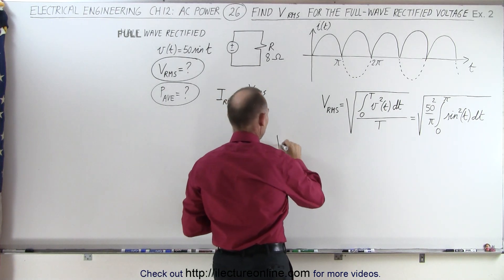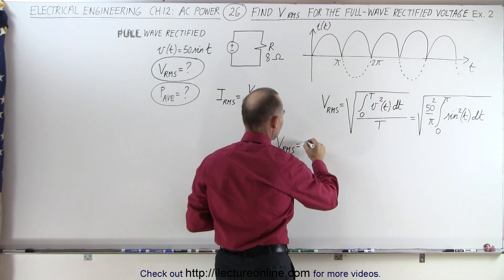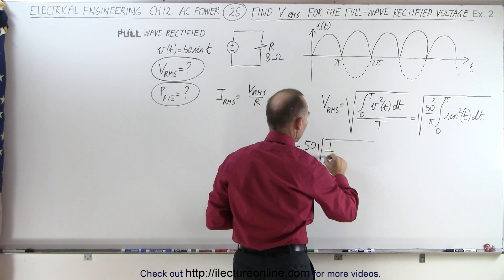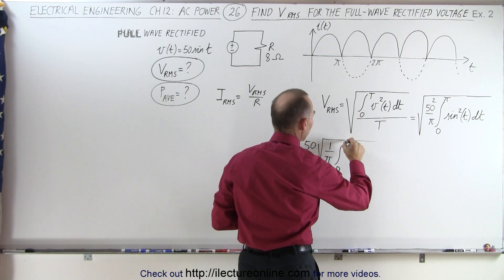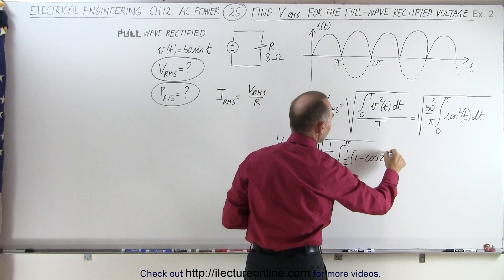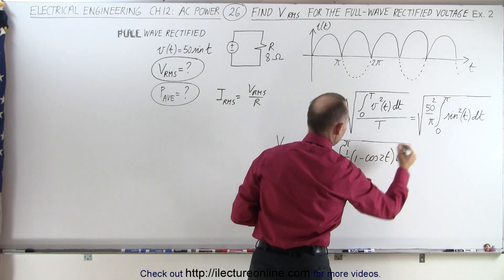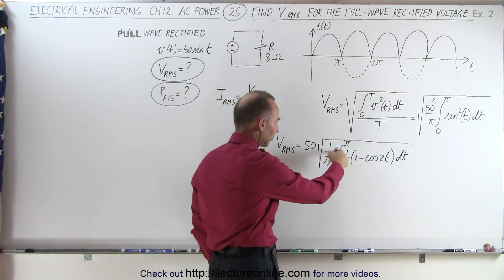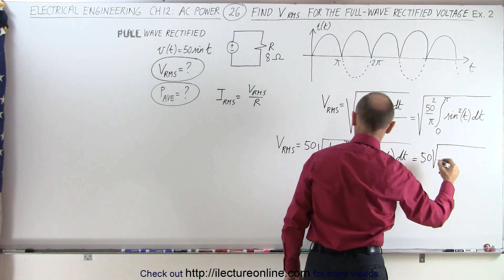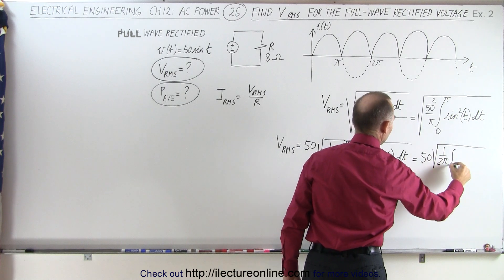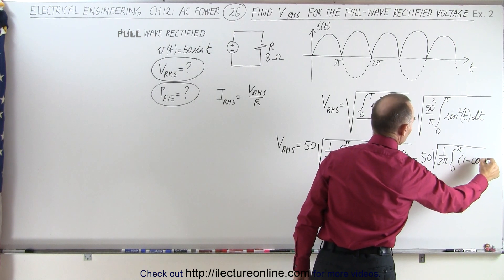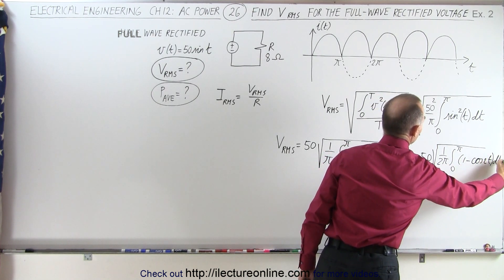That means that VRMS is equal to 50 times the square root of one over the period — in this case pi — times the integral from zero to pi. Instead of writing sine squared of t, we write one half times one minus the cosine of twice the angle, times dt. The one half can come outside the integral sign.